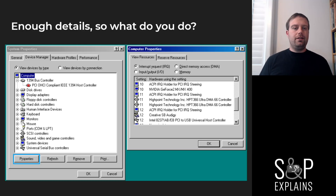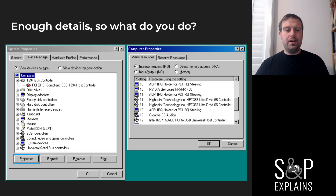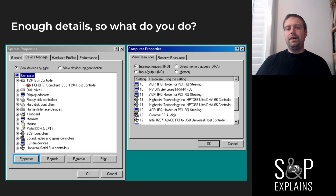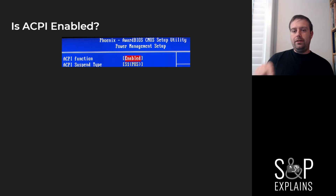Here in Windows 98, to show your IRQs: once you're in Device Manager, click Properties on the computer, and you can see all the IRQs listed and find any conflicts.